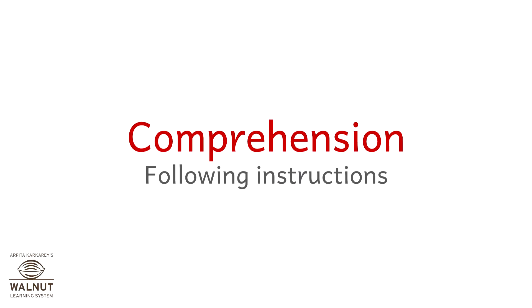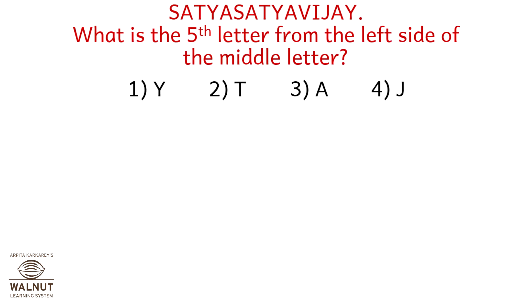Comprehension: Following Instructions. Look at this word. What is the fifth letter from the left side of the middle letter? Option one is Y, option two is T, option three is A, and option four is J.